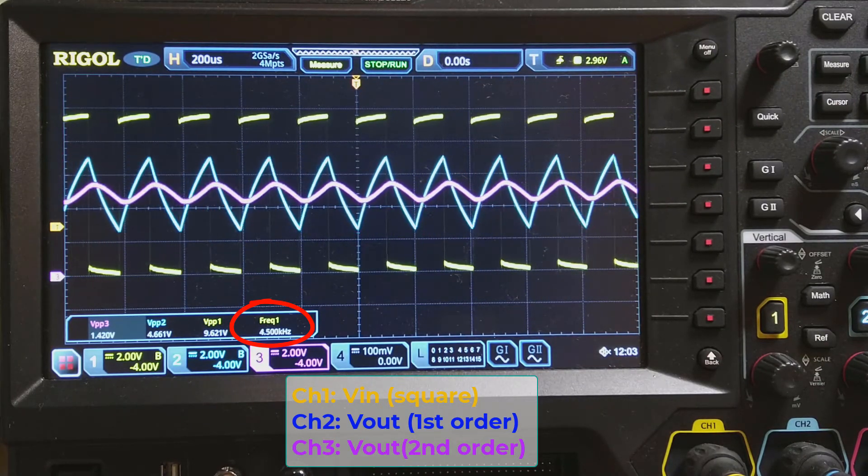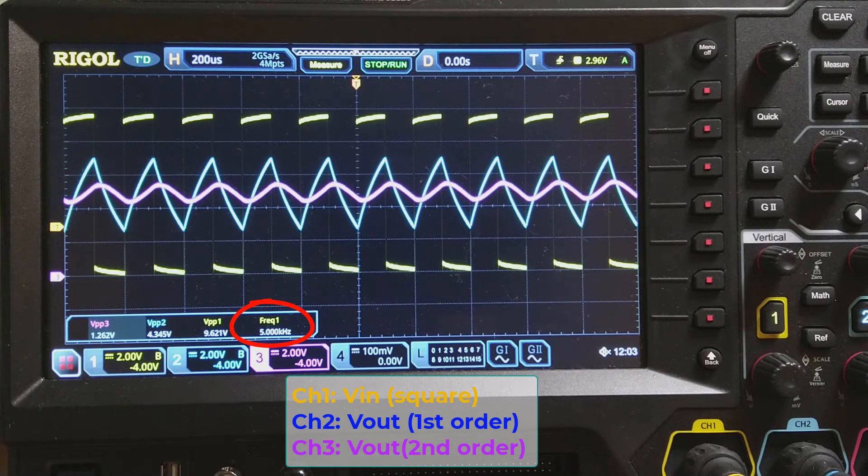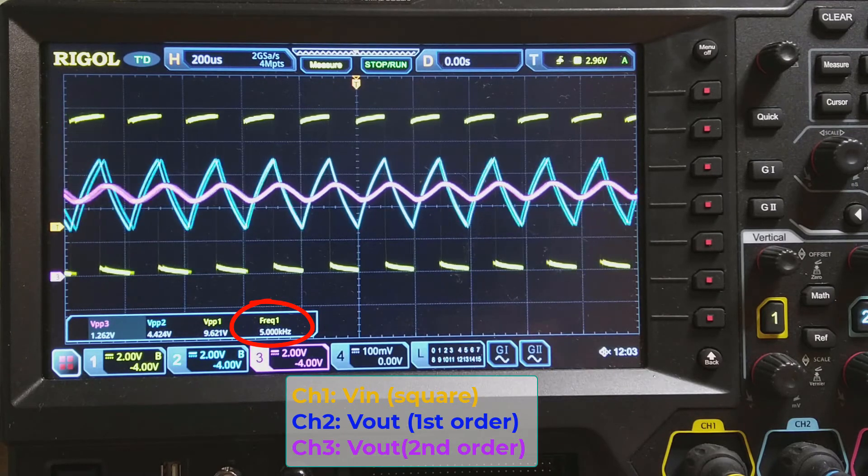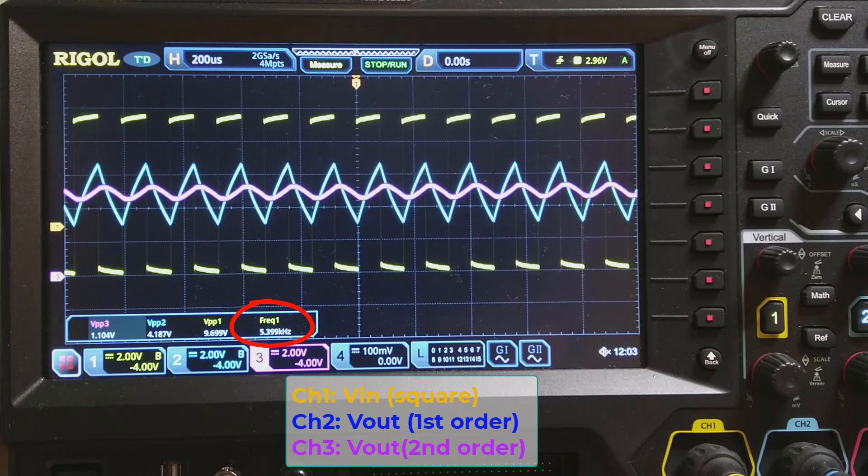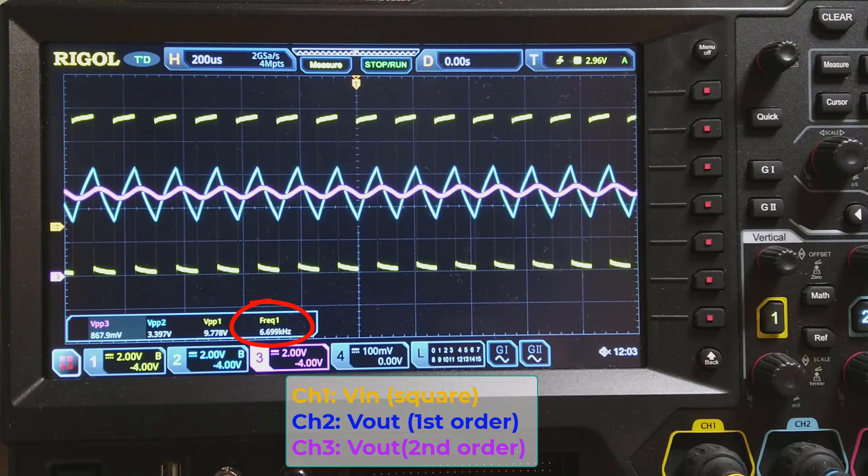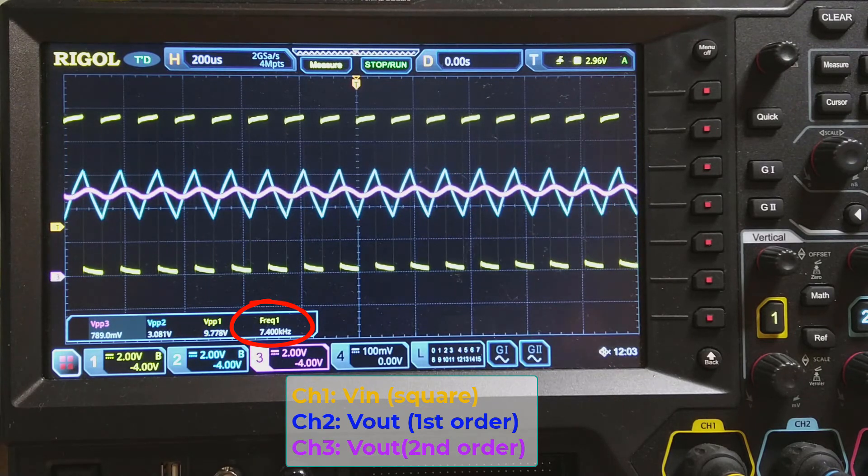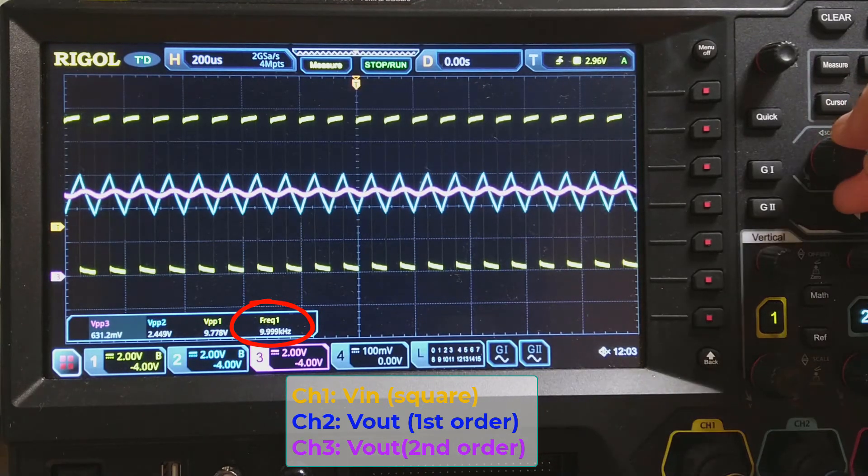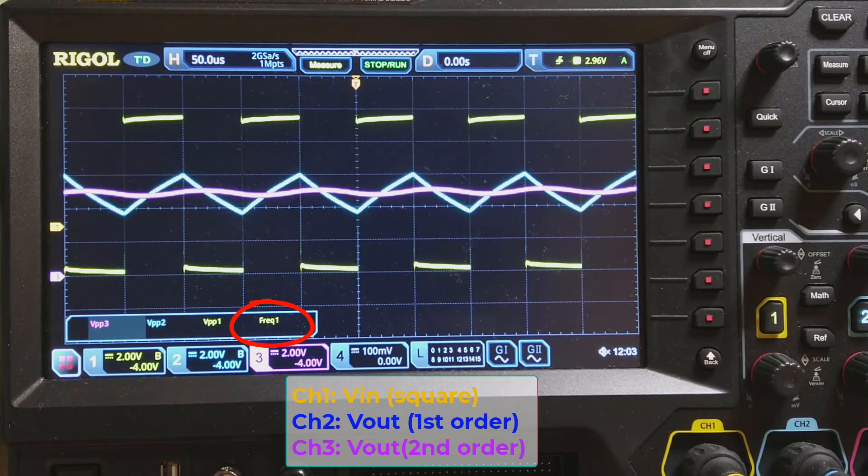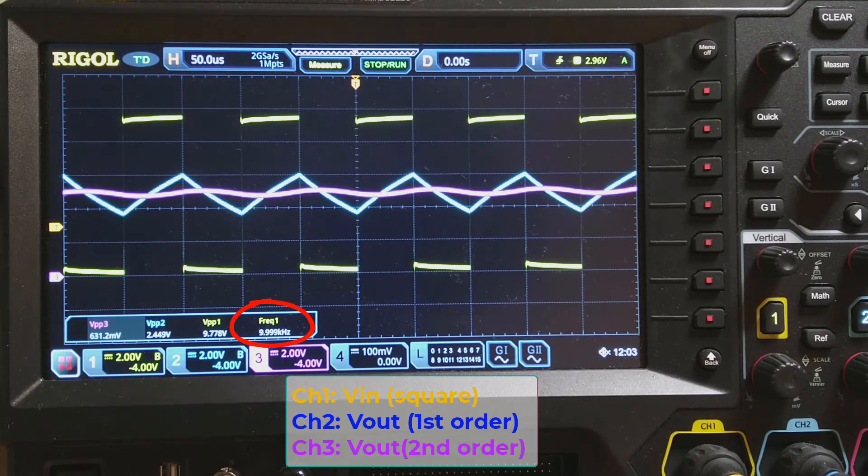At channel 3, if the frequency is higher and higher, it has more attenuation at output. The output voltage at the second-order low-pass filter in channel 3 is approaching its average voltage, with a smaller and smaller ripple voltage.